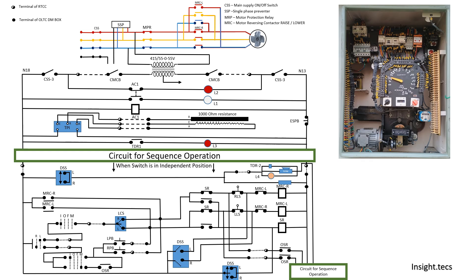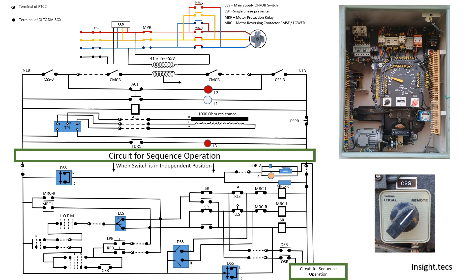Inside the DM box in the OLTC we have a local and remote switch. Whenever local is selected, the operation will be done from the OLTC DM box itself and this path of wiring will be selected for the power flow. Whenever remote is selected, the operation will be done through the RTCC panel and power will flow through that path.